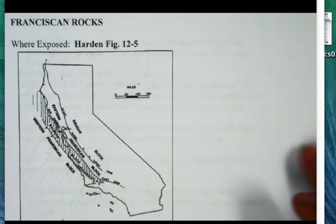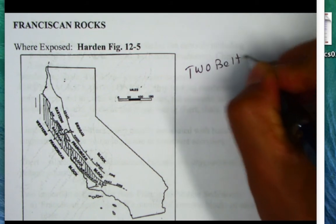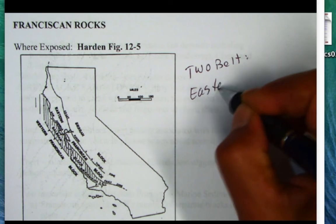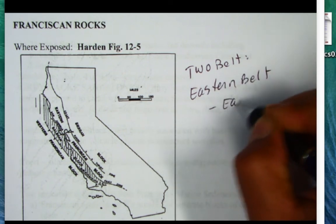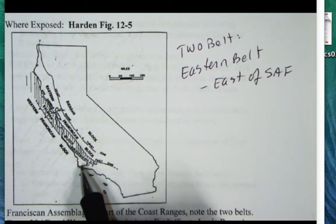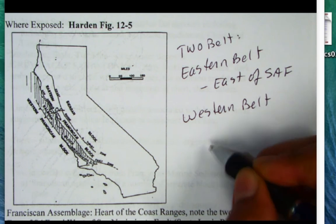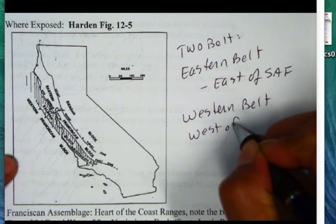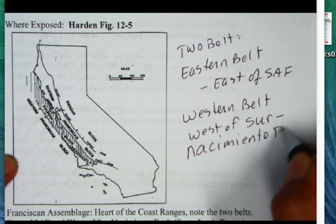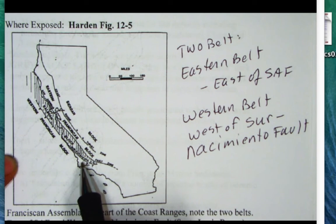The Franciscan rocks can be broken into two belts. The eastern belt occurs east of the San Andreas Fault. There is also a western Franciscan block exposed west of the Sur-Nacimiento Fault — another significant fault in the region.